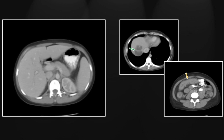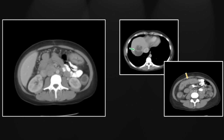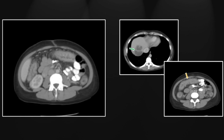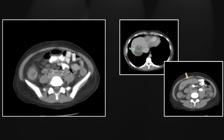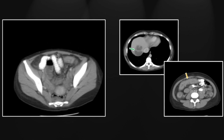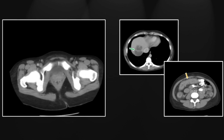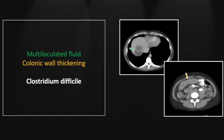But lower down, you can definitely appreciate the pancolitis involving the entire visualized extent of the colon, again highly suggestive of Clostridium difficile infection. So that is a pancolitis from C. diff causing a right hepatic abscess.